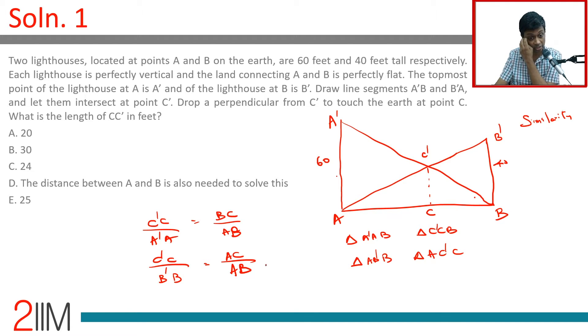Wonderful. C'C by A'A is BC by AB. C'C by B'B is AC by AB. It looks like in both cases there's an AB sitting underneath, and without knowing AB we cannot solve this. It looks like that, because we're further away, closer.